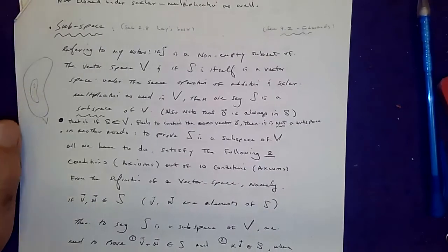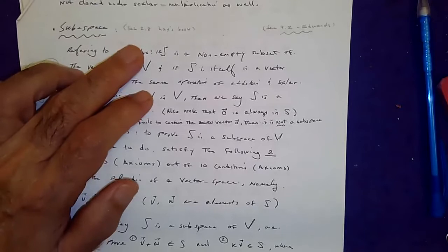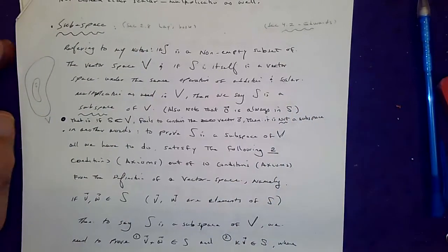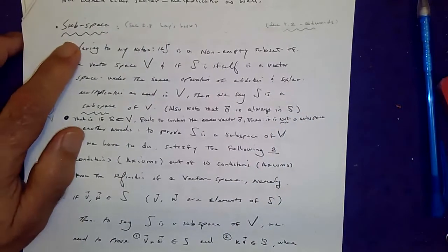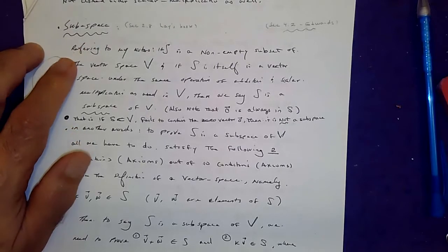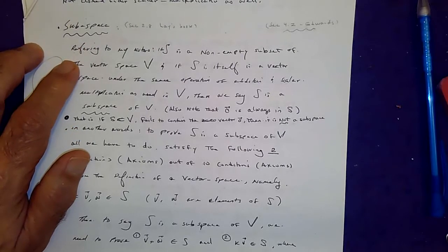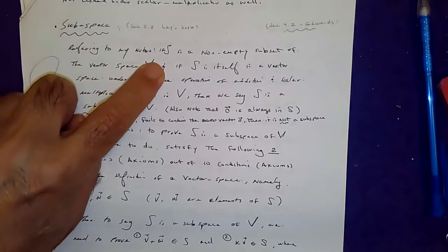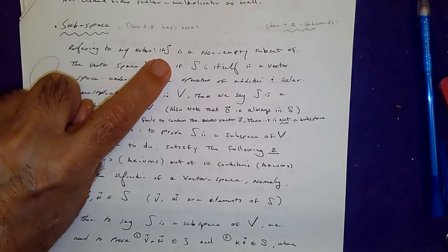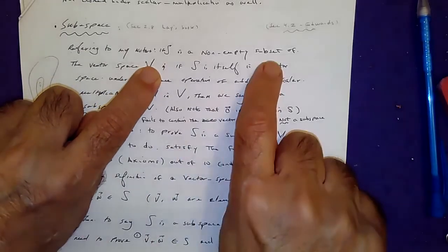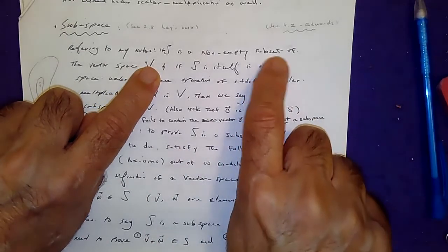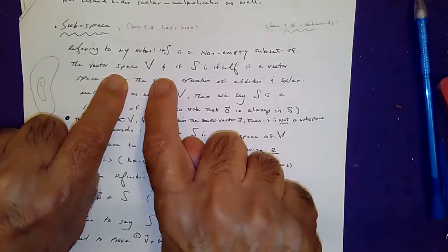This is Section 2.8 in Lay's textbook, which is the same as 4.2 in Edwards. The topic is subspace. A subspace, usually denoted by the letter S, is a non-empty subset — meaning part — of a vector space V.